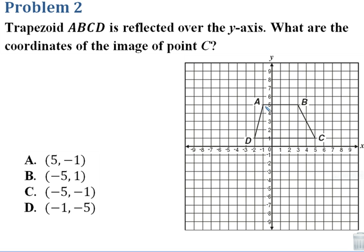It says trapezoid ABCD is reflected over the y-axis. We want to figure out what are the coordinates of the image of point C. Our second type of transformation we talked about was a reflection. And with a reflection, what we're going to do is just take a point and flip it across a line of reflection.